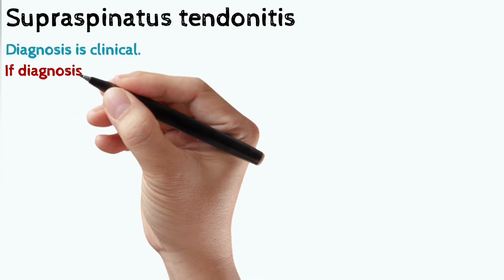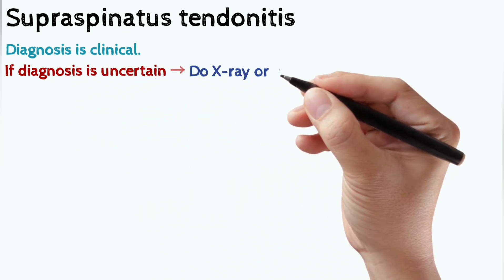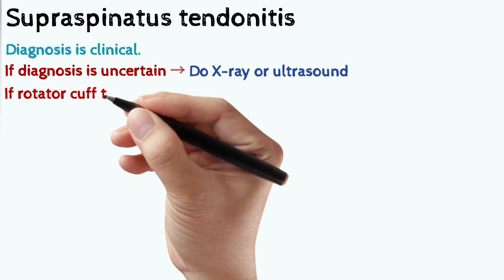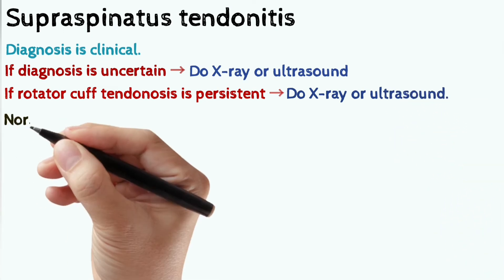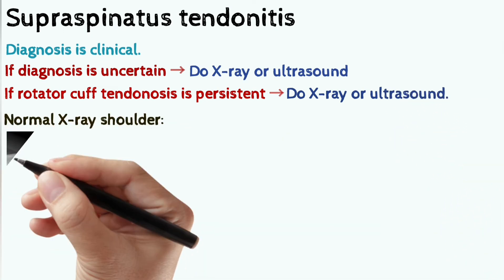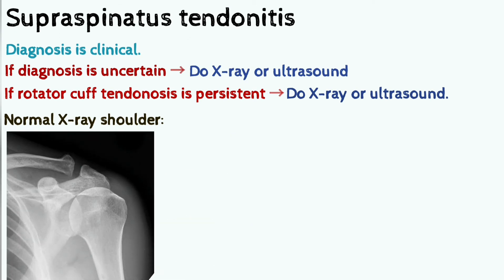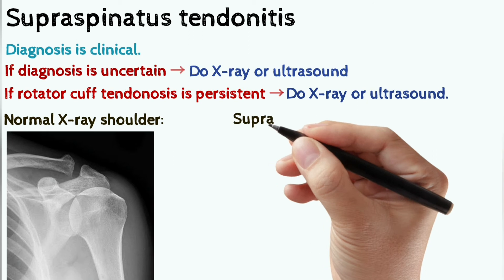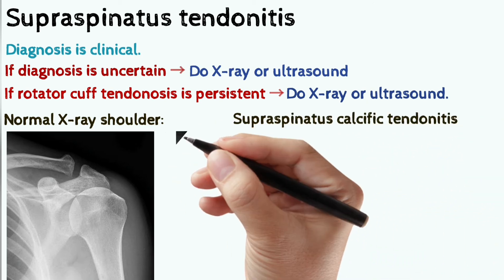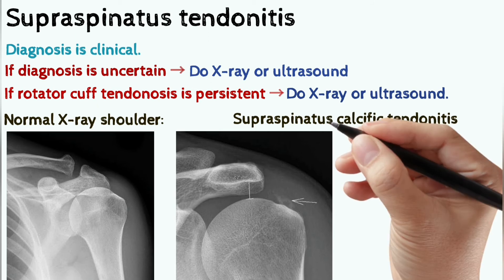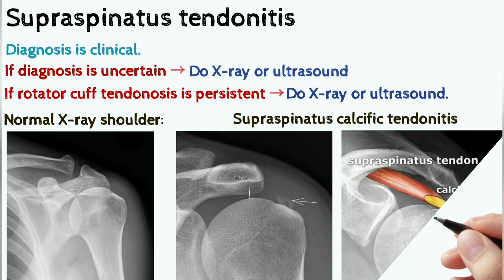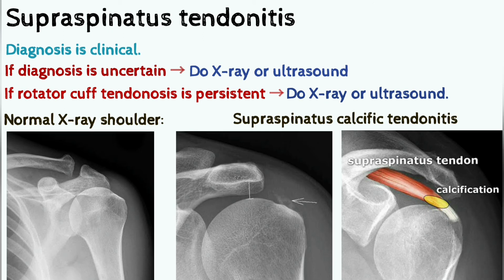Remember, diagnosis is clinical in supraspinatus tendinitis. If diagnosis is uncertain, only then do we do x-ray or ultrasound. If rotator cuff tendinosis is persistent, we will also do x-ray or ultrasound. Here we have shown a normal x-ray of the shoulder joint. The next x-ray shows supraspinatus calcific tendinitis — the white small arrow is showing the calcification, indicating the site of calcification causing supraspinatus calcific tendinitis.